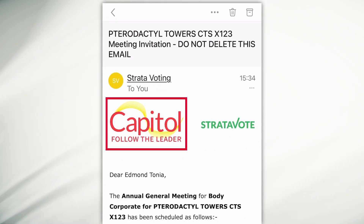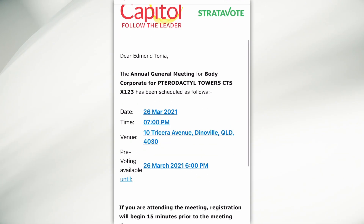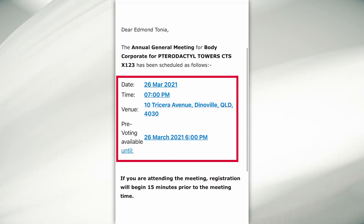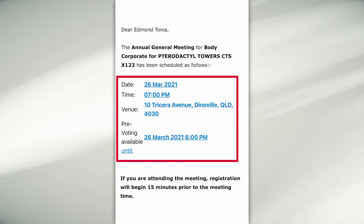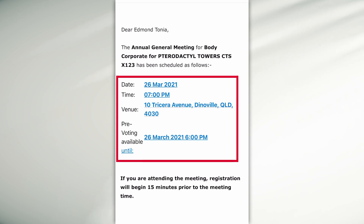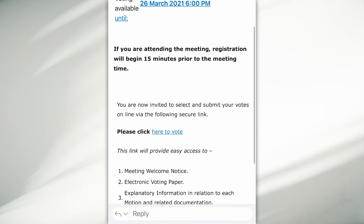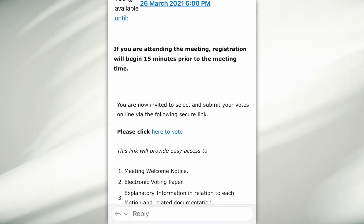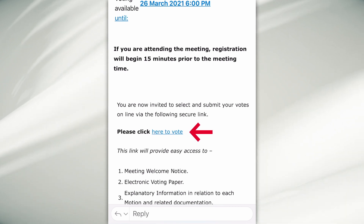You will see that it is from Capital and Strata Vote. It will have the details of your meeting: when it is, where it is, and when pre-voting is available until. As you scroll down, you will see a link which says 'Please click here to vote.'